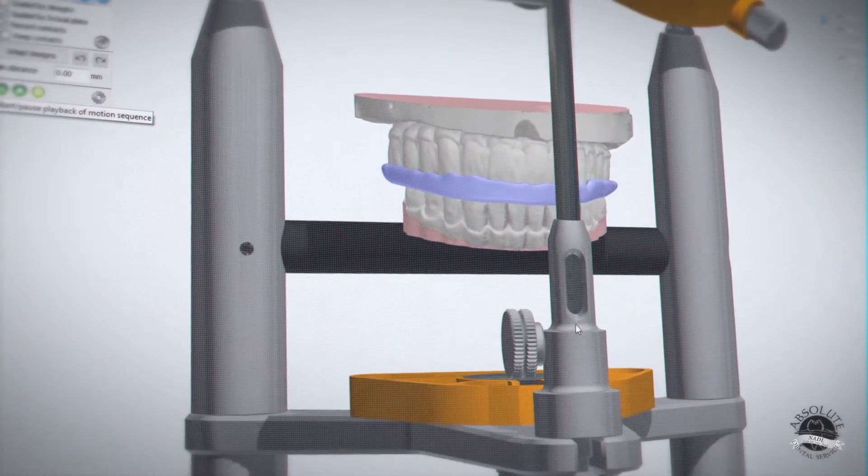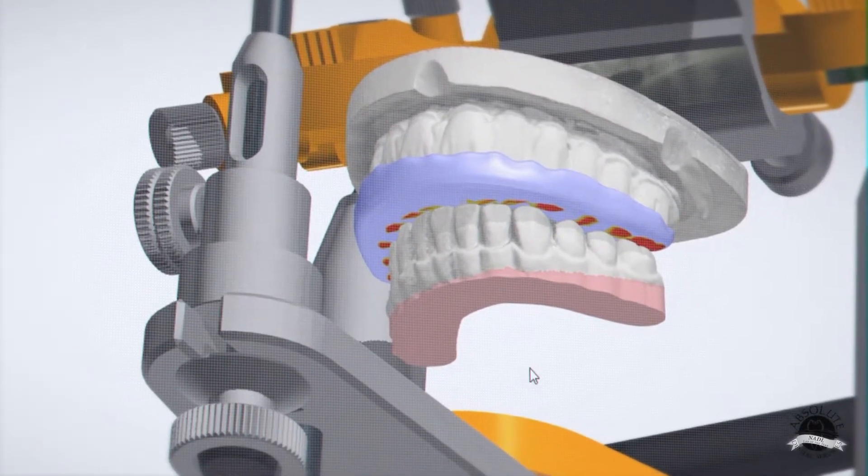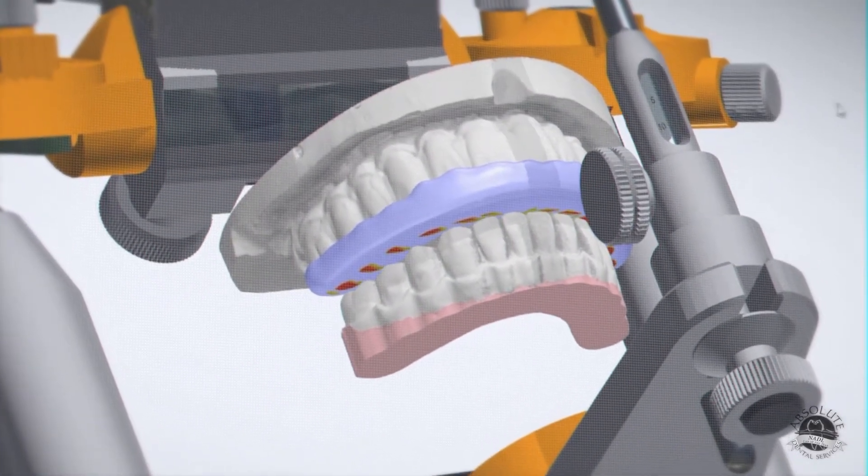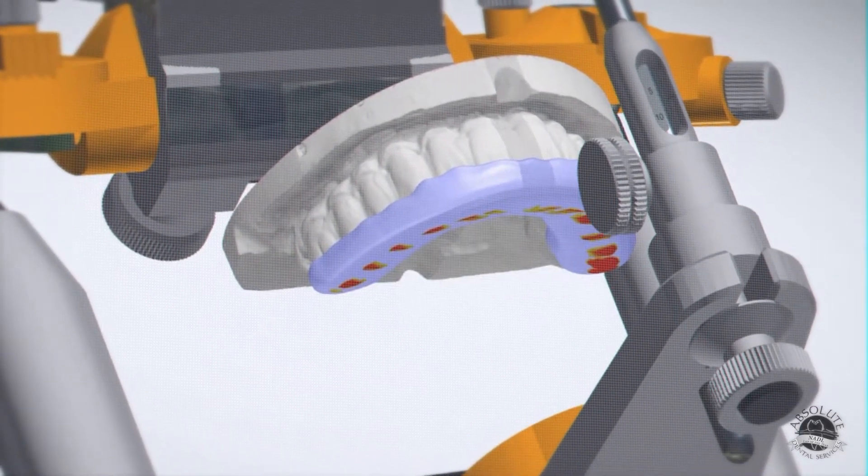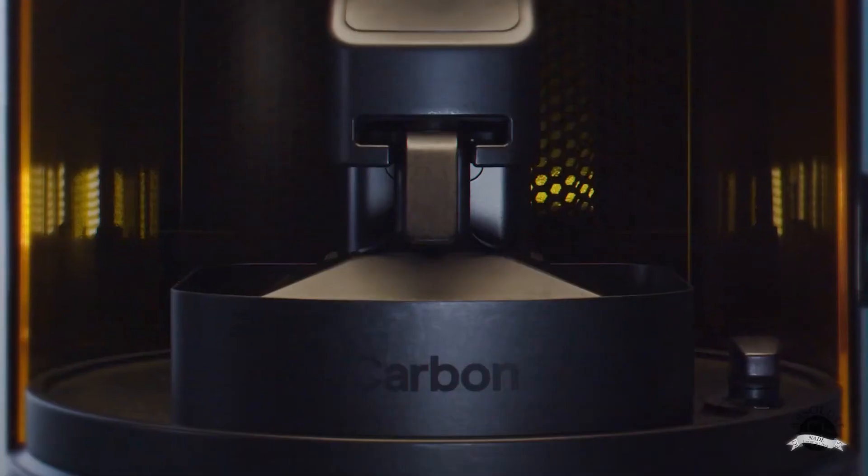This means we can import digital intraoral scans directly from our clinicians, design the night guard in our three shape design software and send the file to our carbon printer to print the night guard in Keystone's key splint material all in a full digital and hands-free processing workflow.